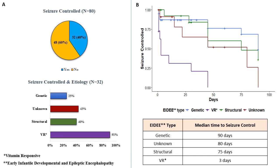On looking at seizure control, the best seizure control was in the vitamin-responsive group. Looking at the Kaplan-Meier graph, the median time for seizure control in the vitamin-responsive group was 3 days, while in the genetic group it was 3 months.